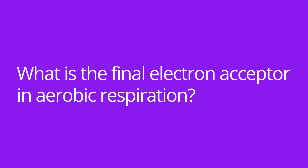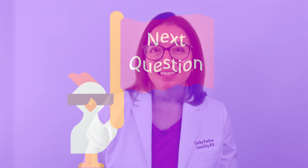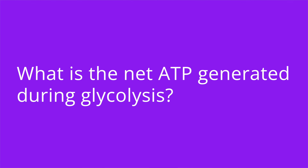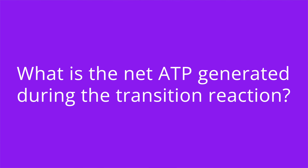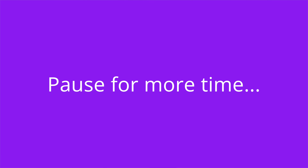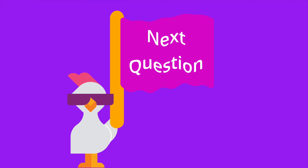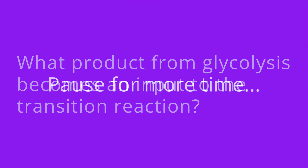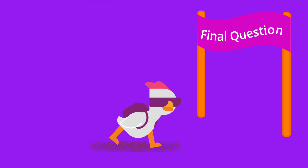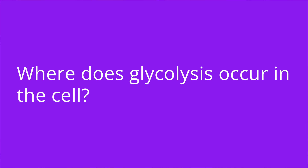It's quiz time and I have five questions for you. Question number one: what is the final electron acceptor in aerobic respiration? The answer is oxygen. Question number two: what is the net ATP generated during glycolysis? The answer is two. Number three: what is the net ATP generated during the transition reaction? The answer is zero. Number four: what product from glycolysis becomes an input to the transition reaction? The answer is pyruvate. And number five: where does glycolysis occur in the cell? The answer is in the cytoplasm.